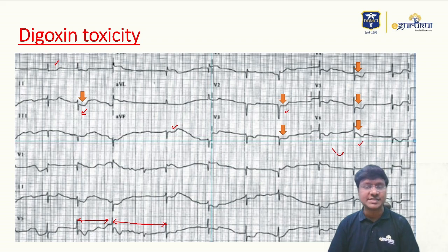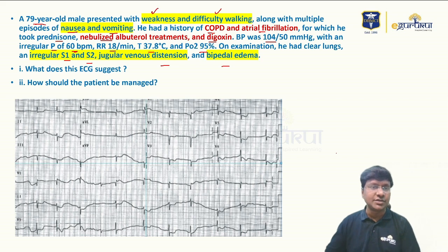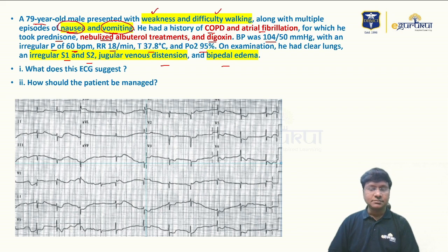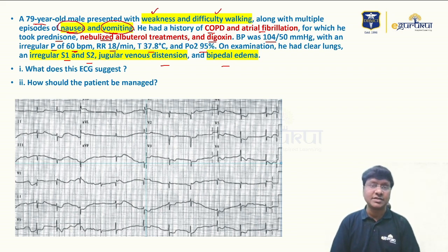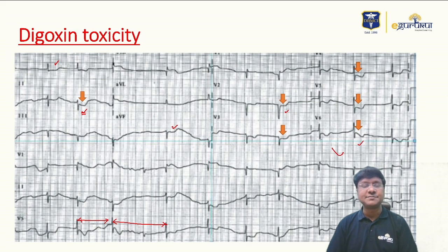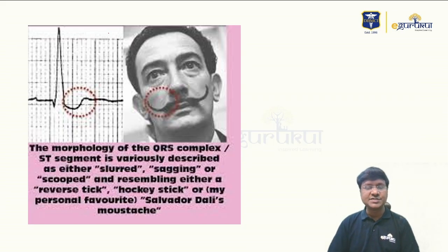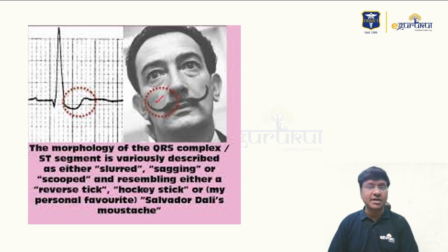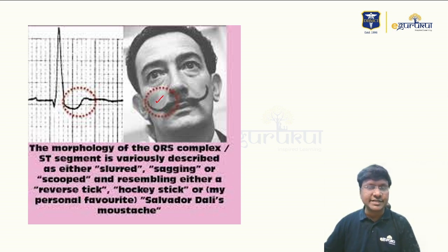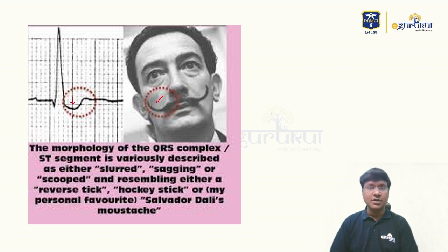The shape of the ST segment depression is like an inverted tick appearance. The presence of that inverted tick appearance in a patient who is on digoxin tells you that the individual has developed digoxin toxicity. The earliest manifestation of digoxin toxicity is the development of nausea and vomiting, so you must suspect digoxin toxicity in this patient.